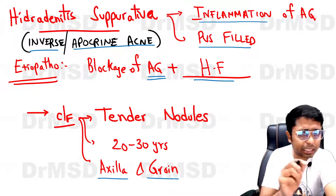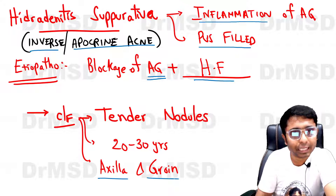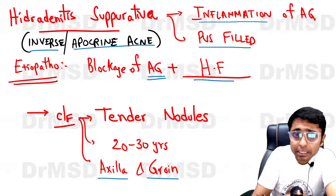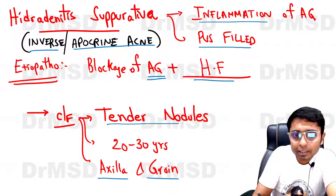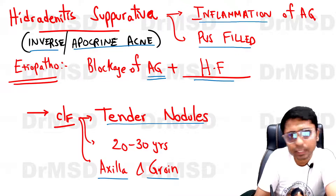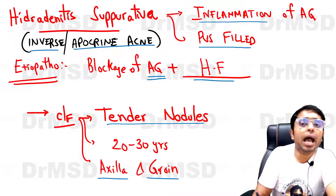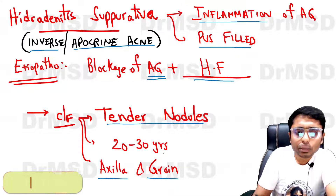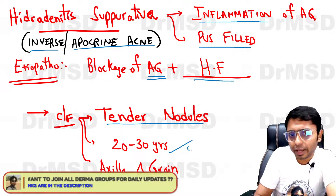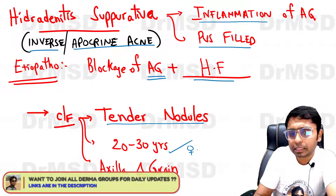Axilla and groin — these are the most important sites. It will present with very painful erythematous nodules, and usually the age group is 20 to 30 years, where females are more commonly affected than males.